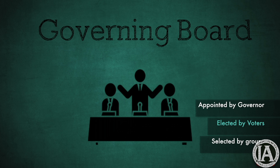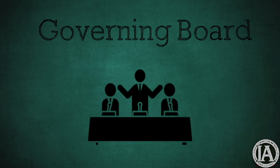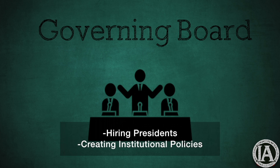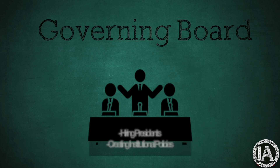The boards at private institutions are often self-perpetuating. This means that outgoing board members select the replacements as their term expires. The main duties of governing boards include the hiring of college and university presidents and creating general fiscal and academic policies for their respective institutions.